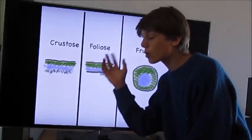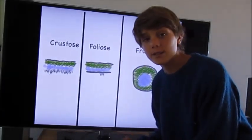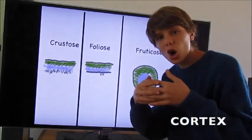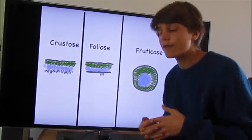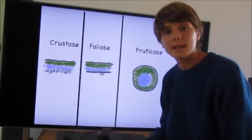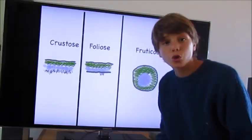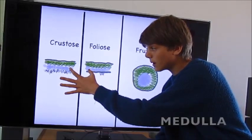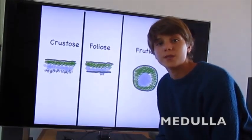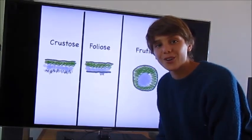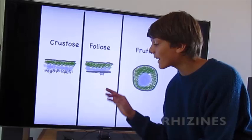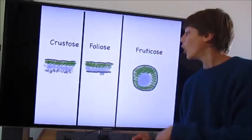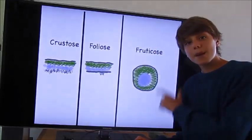This is the structure of the lichen. The structure of the crustose and foliose lichens is pretty similar. It starts with the cortex, which is tightly woven in hyphae. Next are the cells belonging to the algae or cyanobacteria, also known as the photobiont cells. Next is the medulla, where the fungi stores all the nutrients it scabs off the photobiont cells, and finally the rhizines, which connect it to the substrate.